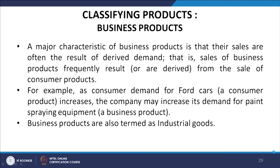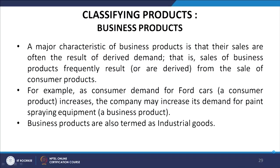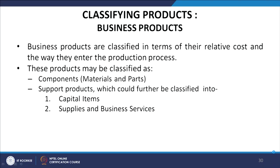Now let us look at the classification of business products. A major characteristic of business products is that their sales are often the result of derived demand — that is, sales of business products frequently result from or are derived from the sales of consumer products. For example, as consumer demand for Ford cars increases, the company may increase its demand for paint-spraying equipment. Business products are classified in terms of relative cost and the way they enter the production process.